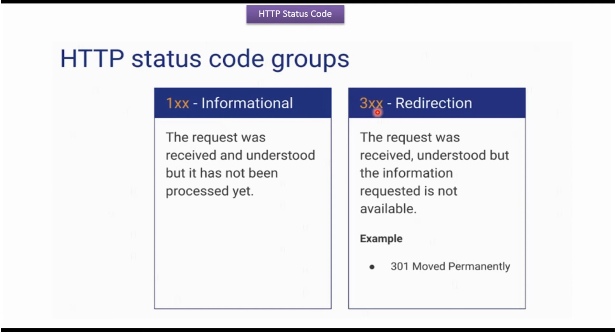The fifth group is the 300 series status code, which is redirection. The client sent a request to the server; the request was received and understood, but the information requested is not available — maybe it has moved to some other location. An example is 301 meaning moved permanently.